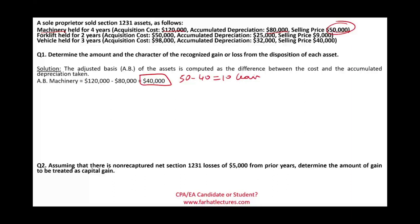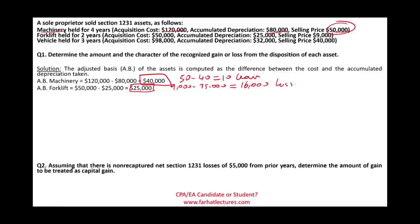Now let's look at the forklift. The cost was $50,000 and accumulated depreciation was $25,000, so the adjusted basis is $25,000. We sold it for $9,000. $9,000 minus $25,000 gives us a loss of $16,000.